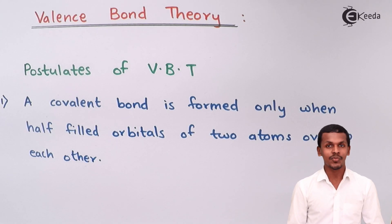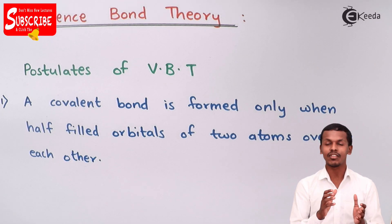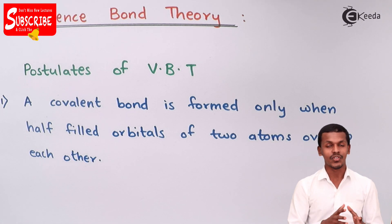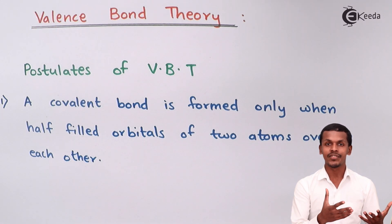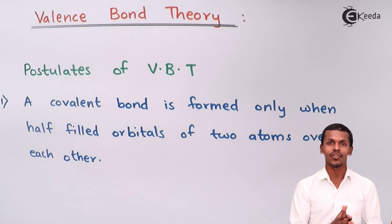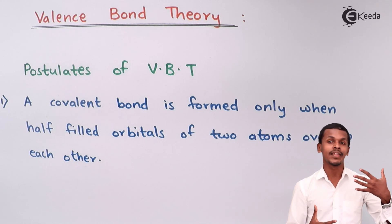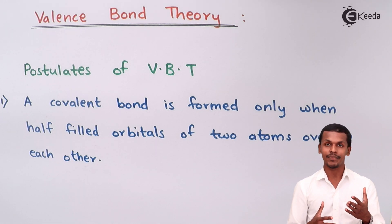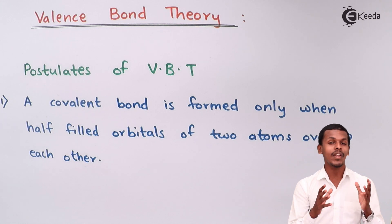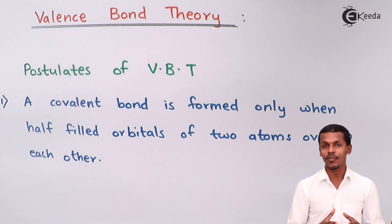Before understanding the valence bond theory, we should understand its postulates. Valence bond theory gives us the detail of the direction of the orbitals which a particular valence shell consists of. A valence shell consists of various orbitals — s, p, d, or f — and during bond formation with other atoms, they form a particular direction, making a particular angle or geometry. These details can be explained with the help of valence bond theory.